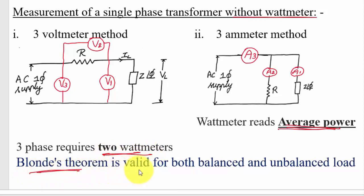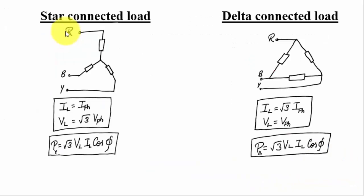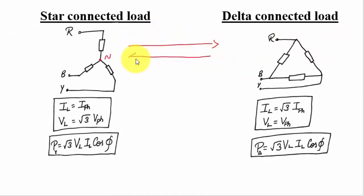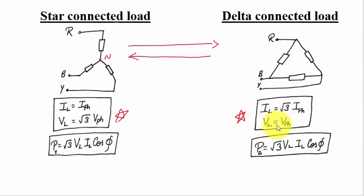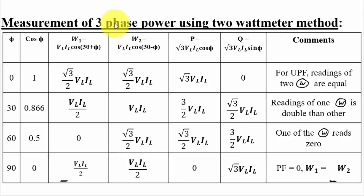Three-phase power requires only two wattmeters. Blondel's theorem is valid for both balanced and unbalanced loads. In a star-connected network, a neutral node is present. For star-connected load: line current equals phase current, and line voltage equals √3 times phase voltage. For delta-connected load: line current equals √3 times phase current, and line voltage equals phase voltage. Power for both star and delta connected loads is given by √3 × VL × IL × cos φ.